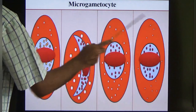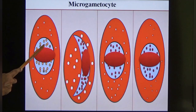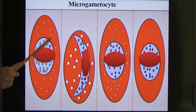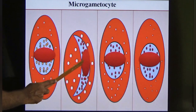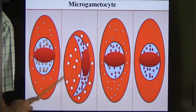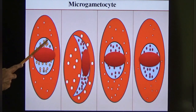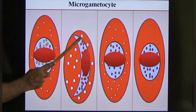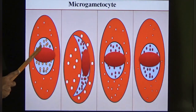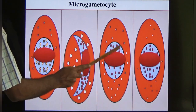Diagrammatically: in vivax, ovale and malariae the RBC is enlarged with the gametocyte inside, and hemozoin pigment spread throughout the cytoplasm — golden brown in vivax, dark brown in falciparum, dark brown-black in ovale, and black in malariae. In falciparum the gametocyte is crescent-shaped; all others are round. The key things to remember are: the shape of falciparum gametocyte (crescent) and the color of hemozoin pigment.